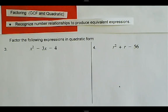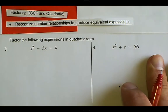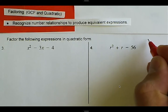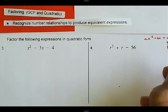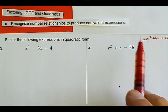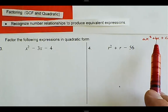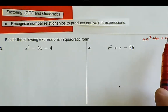We're talking about factoring with greatest common factor in quadratic form. Quadratic form just means that the form of the equation is ax squared plus bx plus c — so we have a squared term, a linear term, and then a constant.